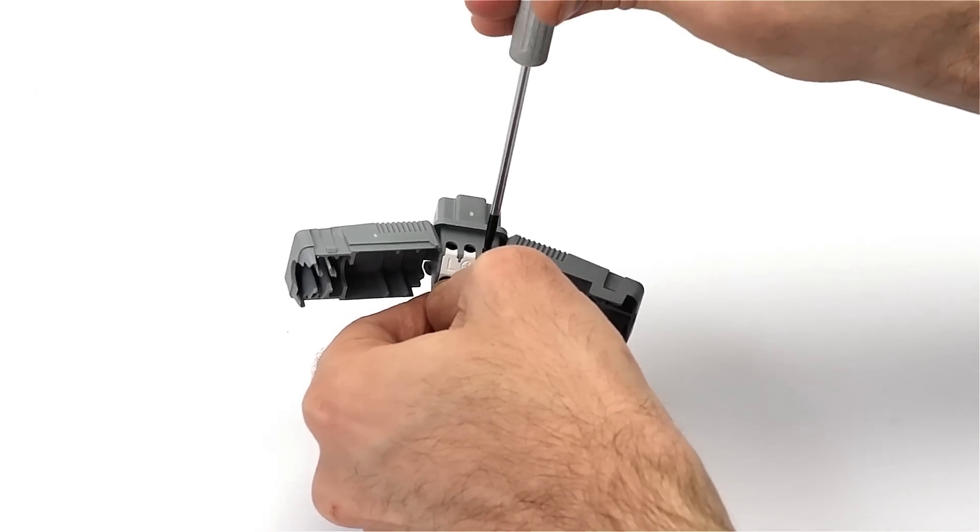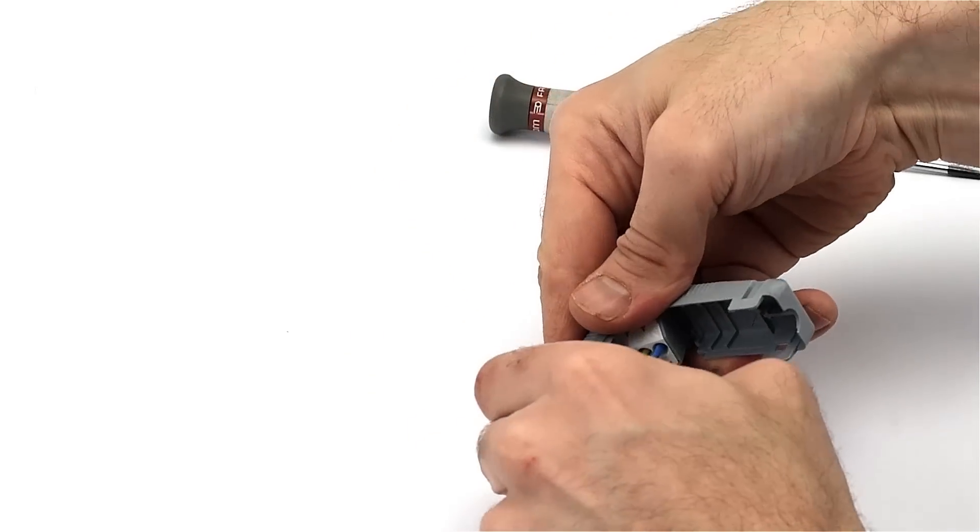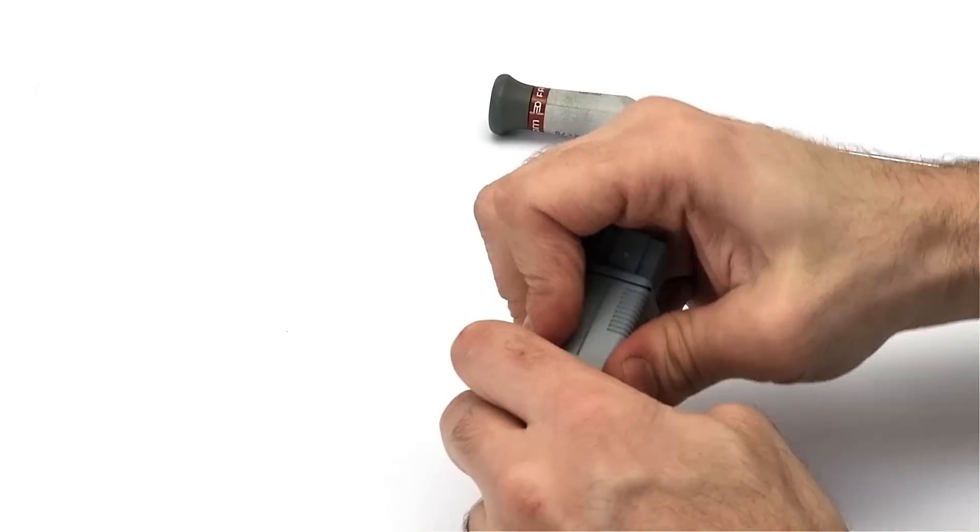Once you've made the terminations, just snap the one-piece cover shut, which automatically sheath grips the cable.